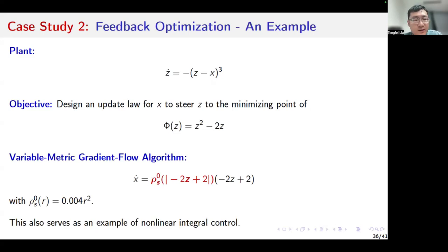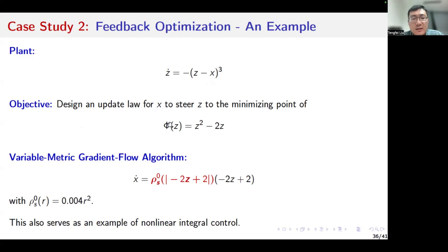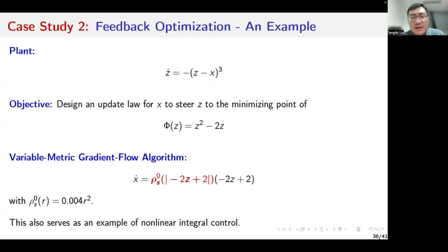Here is a very simple example. We consider this non-linear plant, for which we have shown global asymptotic stability and the existence of a static map. The objective is to design an update law for x to steer the state z to the minimizing point of the quadratic objective function. We designed a variable metric gradient flow algorithm to solve the problem. I'd like to mention that this example also serves as an example of non-linear integral control, because integral control can be considered as a special case of feedback optimization with quadratic objective functions.